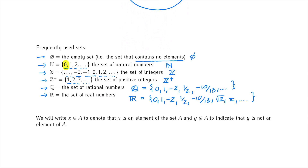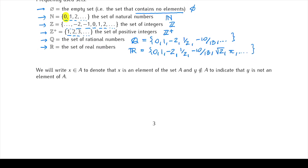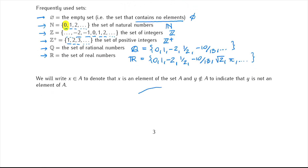Going back to general set notation: given a set A and some element of this set, let's call it x. In order to denote that x is an element of set A, we write that x belongs to A. If we have some element which is outside the set and we want to denote that element y is not an element of A, then we write that y does not belong to A.